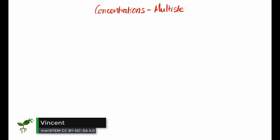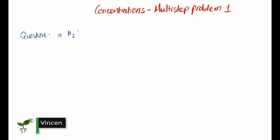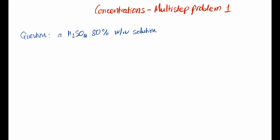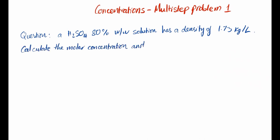Let's do a question that combines some of the chemical quantity concepts you just learned. We have an 80% sulfuric acid H₂SO₄ concentrated solution — 80% by weight, with the rest assumed to be mainly water. Its density has been measured experimentally to be 1.73 kilograms per liter. Calculate the molar concentration and the molality of that solution.